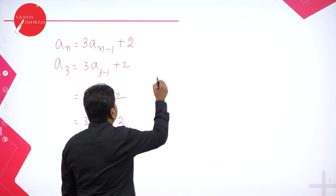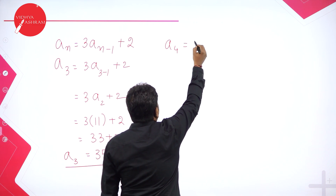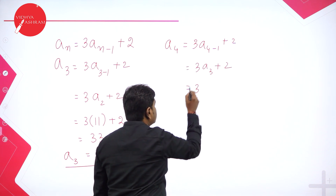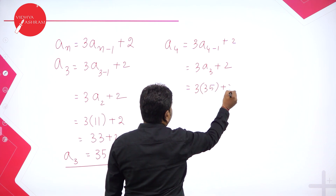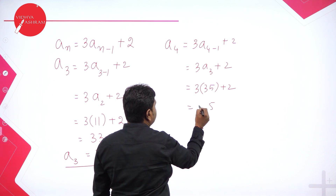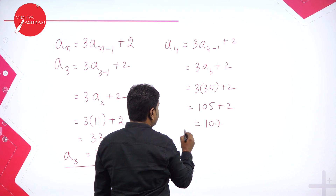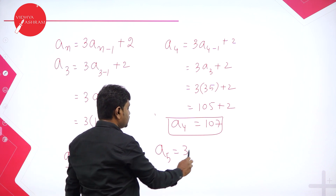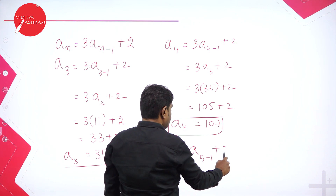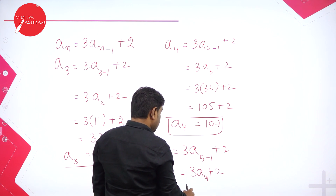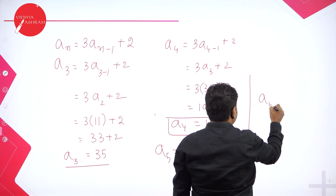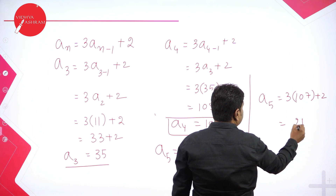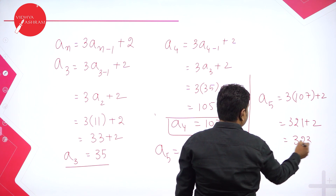Now go to A4. A4 = 3 times A3 plus 2. A3 = 35, so A4 = 3 times 35 plus 2 = 105 plus 2 = 107. We need first 5 terms, so go to A5. In the formula, put N = 5: A5 = 3 times A4 plus 2. A4 = 107, so A5 = 3 into 107 plus 2 = 321 plus 2 = 323.